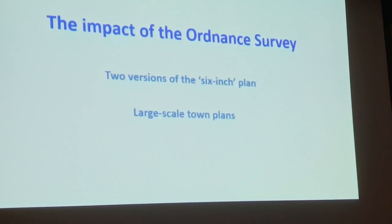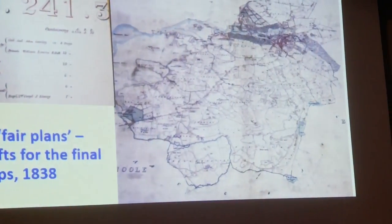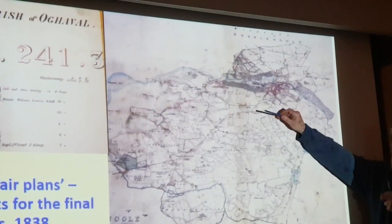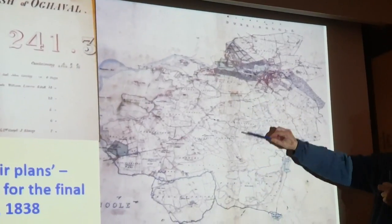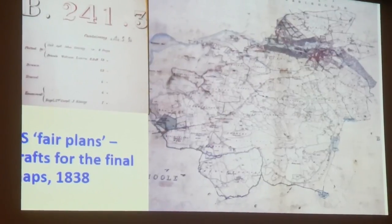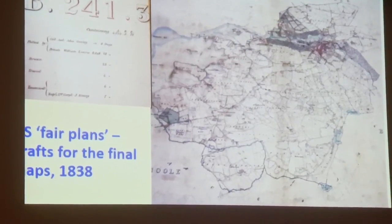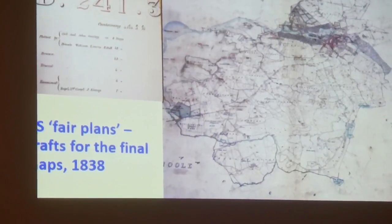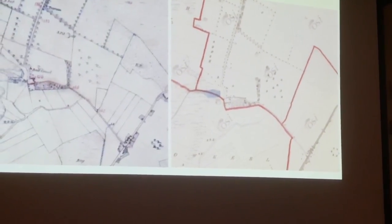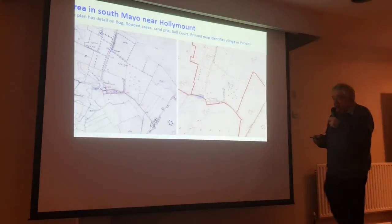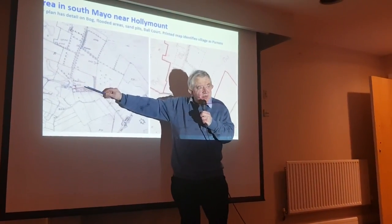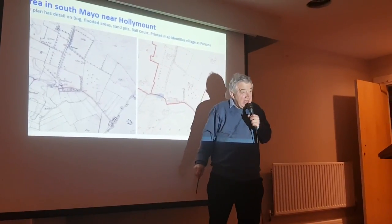This is what the draft plan for the Westport area looked like — there's Westport, there's the domain, and here's the rural area as drawn on what were called the fair plans, the hand-drawn plans made up for each parish in Ireland. The fair plans are quite interesting in contrast to the final plans sometimes. Here's one near Hollymount, way down in the south of Mayo — the fair plan has a ball court included there. Ball alleys and ball courts are actually quite widespread in the 1830s, seeming to be one of the earliest popular sports across Ireland.